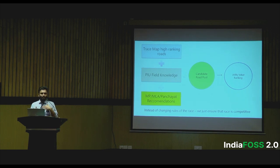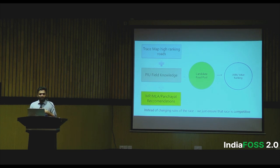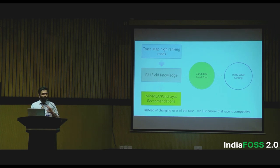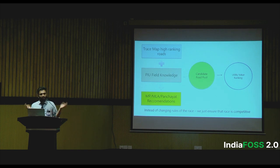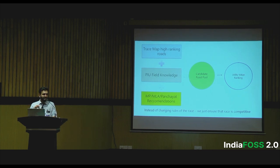The idea was also not to imply the block engineer is a bad actor — that's not the case. The block engineer obviously knows much more about the area where they're living and can come up with better combinations of roads. So the map recommends which edges of the network are important, but the way we train them is that this is a supportive tool. The final candidate road pool combines the algorithm's data-driven part, the local knowledge the block engineer has, and the MP/MLA recommendations, because they do have a right to give input in the process.